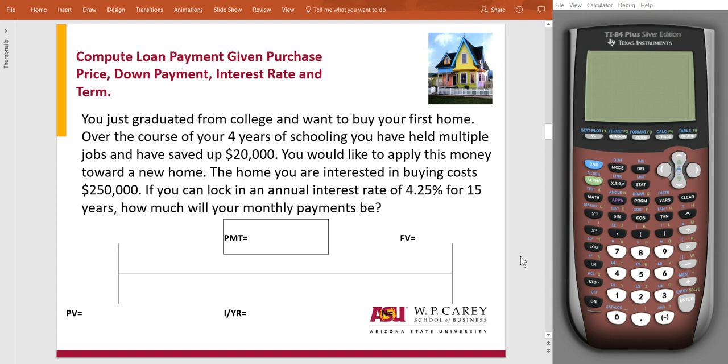Super fun question to go through. So let's jump into it. This particular question says, you just graduated from college. You want to buy your first home. Over the course of your four years of schooling, you had multiple jobs, and you ended up saving $20,000. And that $20,000, you want to apply towards this new home.